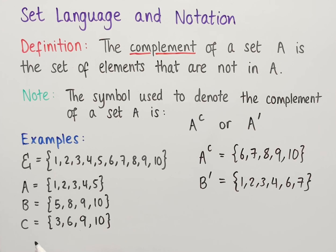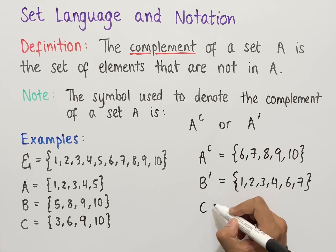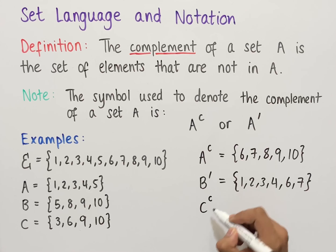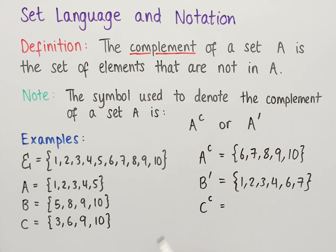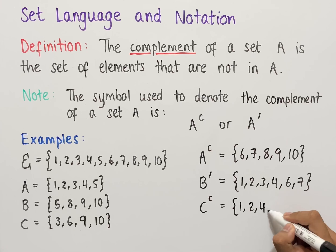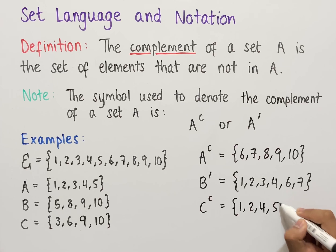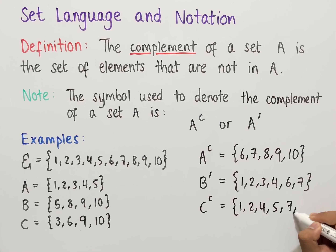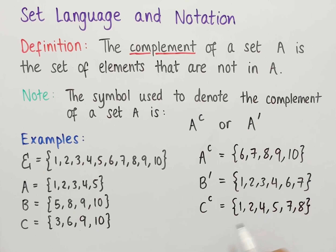Finally, if we wanted to work out C complement, using the superscript small c, that would be equal to all of the elements that are not in C but are in the universal set. That's 1, 2, 4, 5, 7, and 8. These are all of the elements not in C but in the universal set, so they're in C complement.